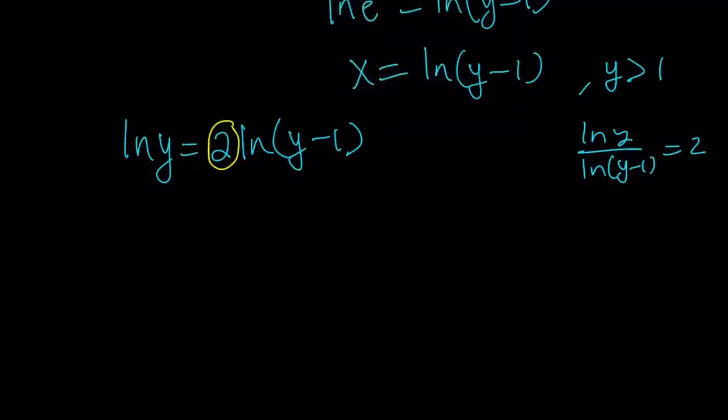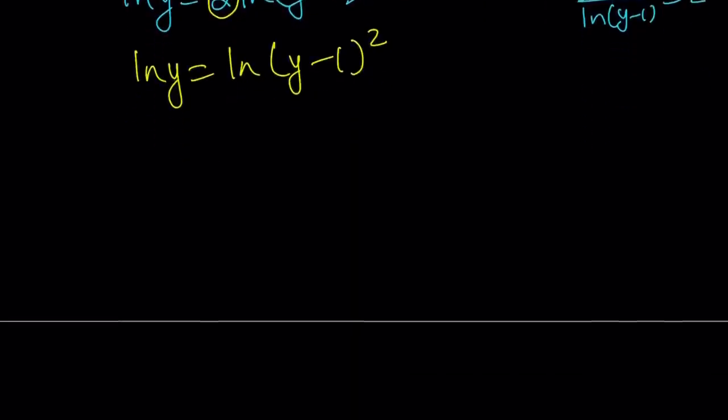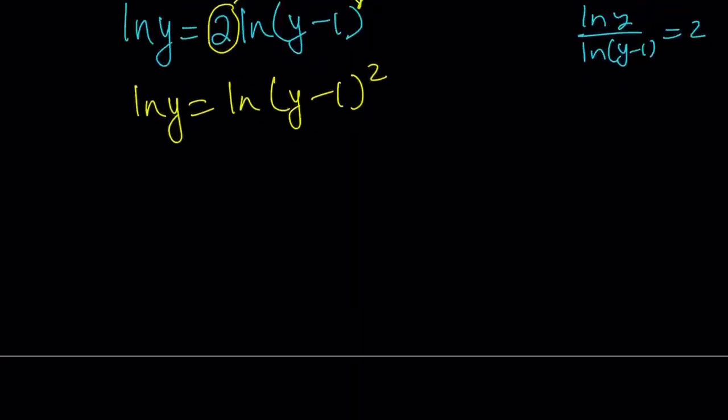So, you can go ahead and move this to, and obviously, as long as y is greater than 1, like y - 1 is positive, this is good. You can go ahead and move the power, but that kind of changes the domain because now y doesn't have to be greater than 1, but it has to be greater than 1. Anyways, so you can kind of figure that out, but this gives us ln(y) = ln((y - 1)^2) because the power rules. And from here, we can safely drop the ln and just say, hey, (y - 1)^2 should equal y.